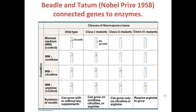In the 1940s, two scientists, Beadle and Tatum, were able to put these ideas together and were awarded the Nobel Prize for Physiology in 1958 for their work connecting genes to enzymes. Beadle and Tatum used a mold called Neurospora crassa, a haploid mold so there are no dominant or recessive mutations because there's only one copy of each gene in the genome. They exposed spores of this mold to X-rays or UV radiation, which was known to induce mutations in the DNA.